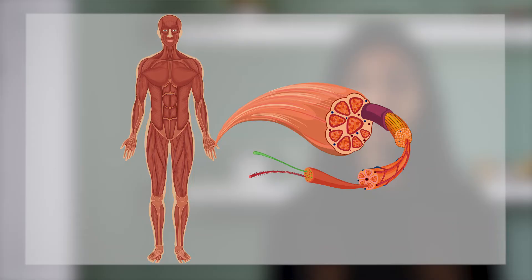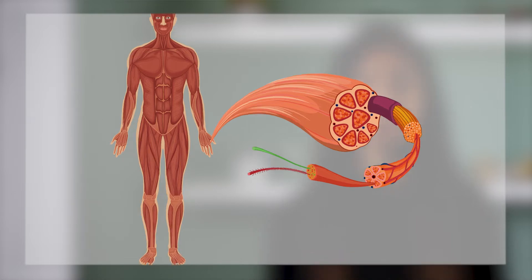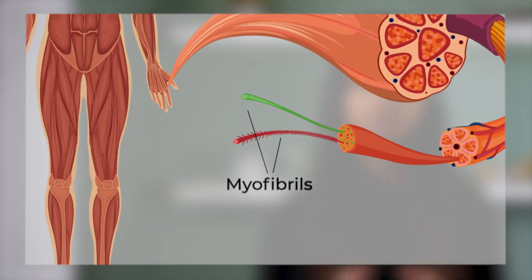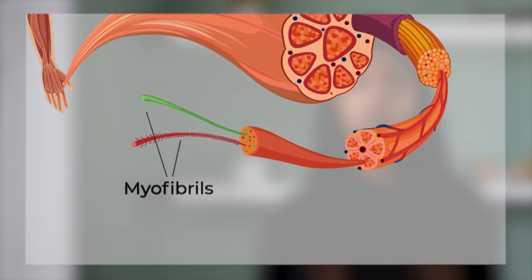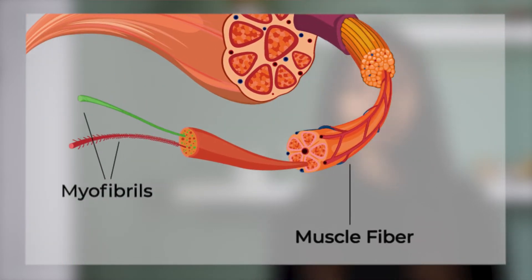Every muscle in your body has something called a muscle fiber. These muscle fibers will collectively shorten or lengthen to make your joints move. If you zoom into these muscle fibers, you will see tiny thread-like structures called myofibrils. Thousands of these myofibrils together will form a muscle fiber.